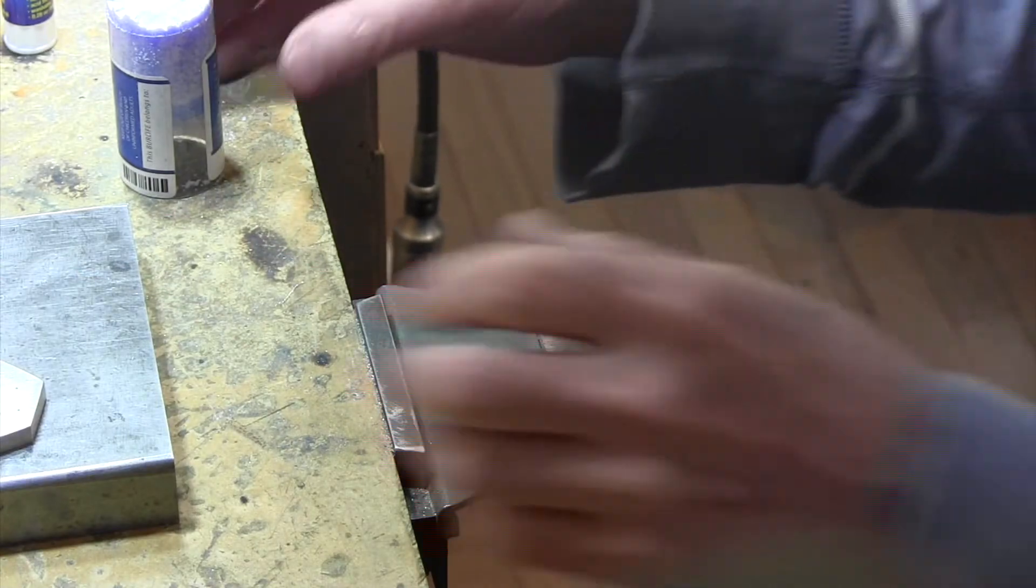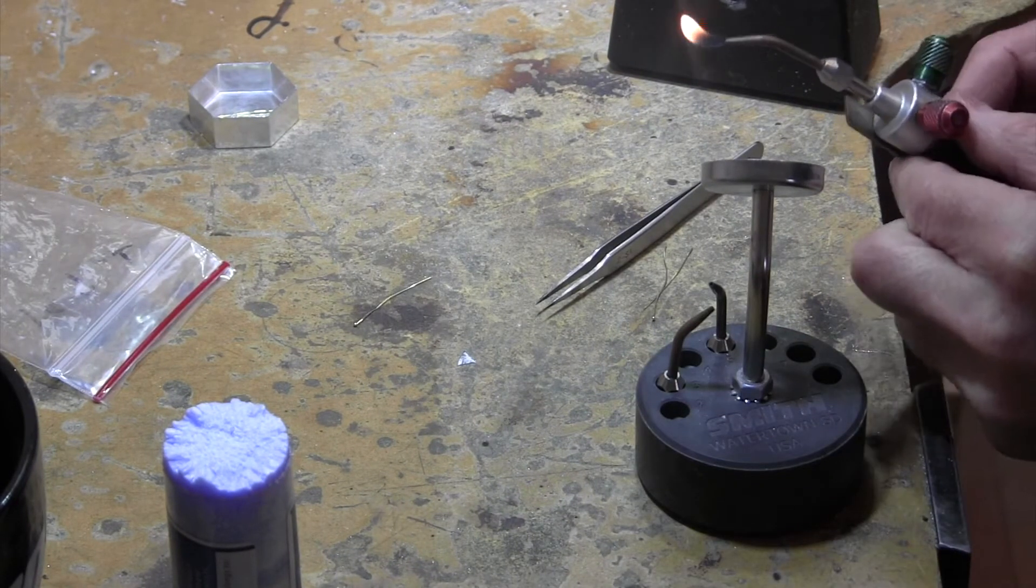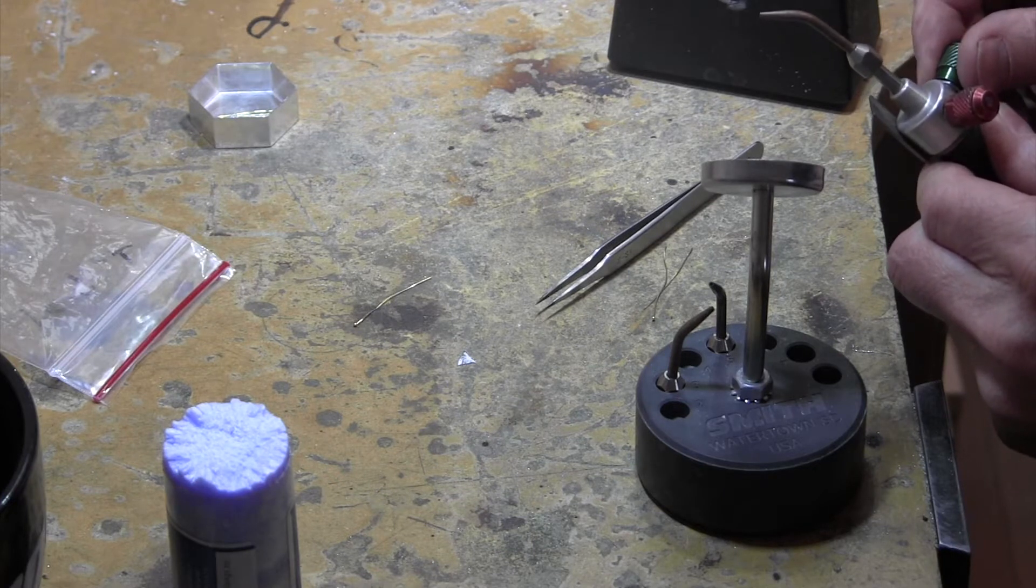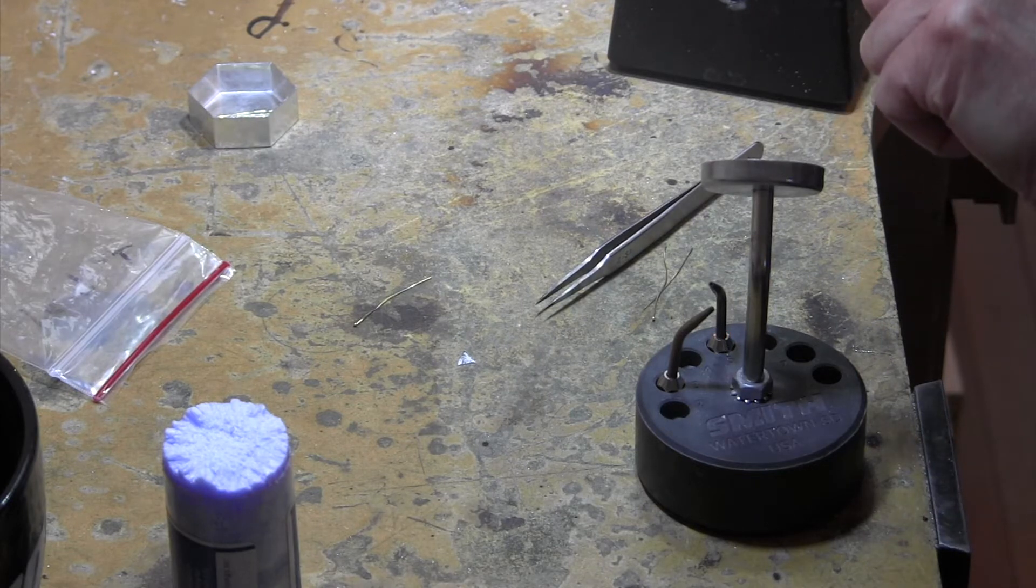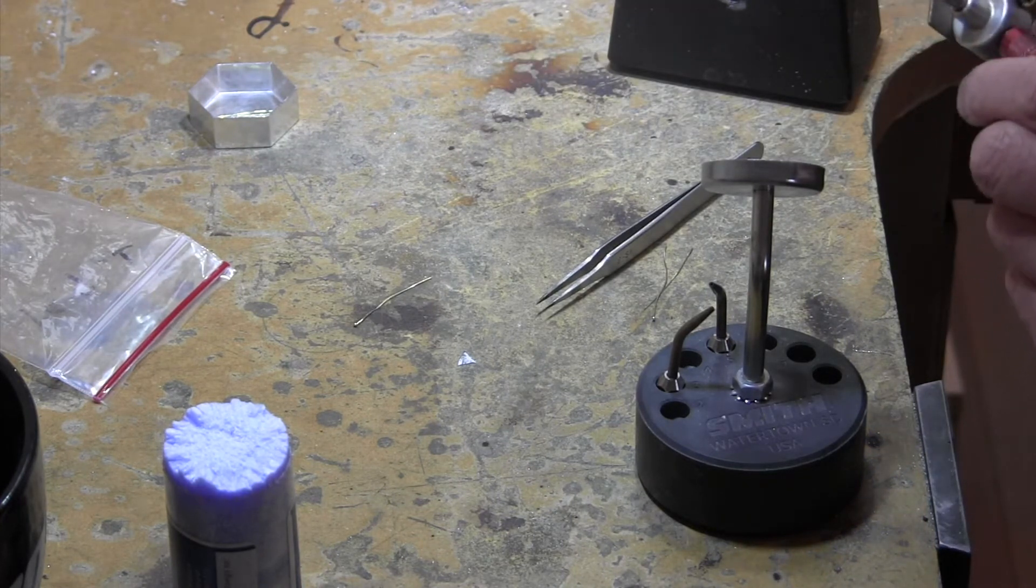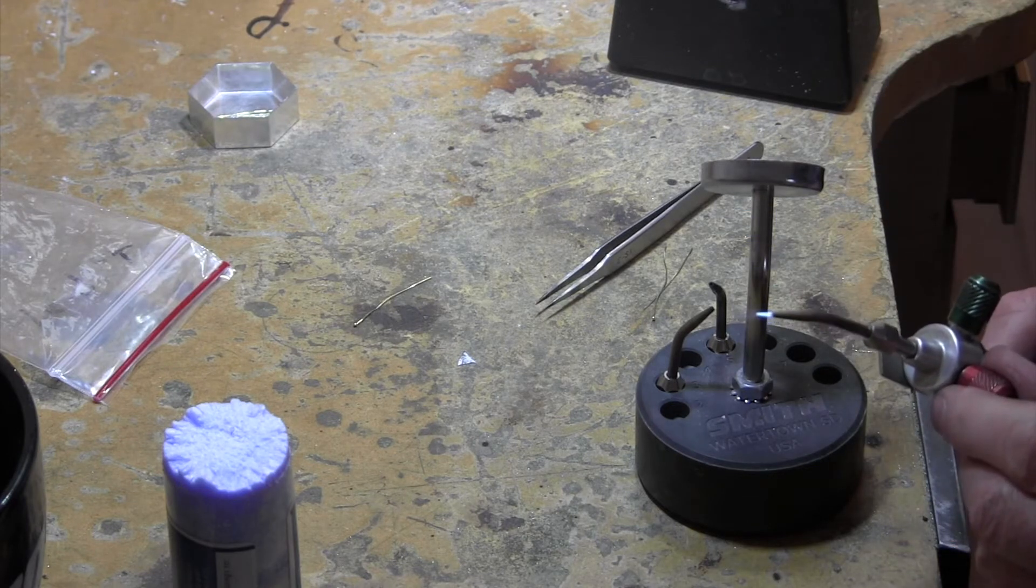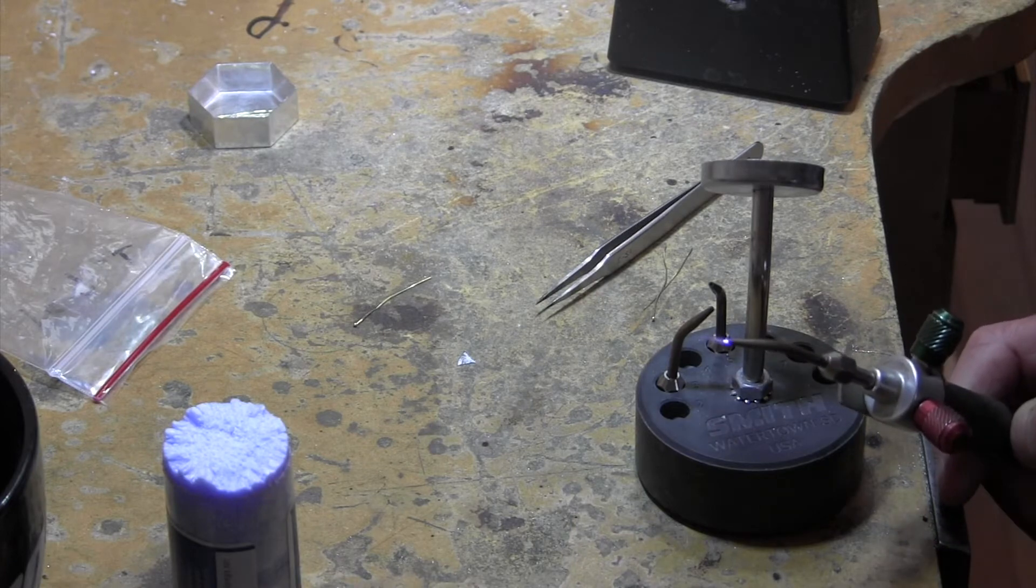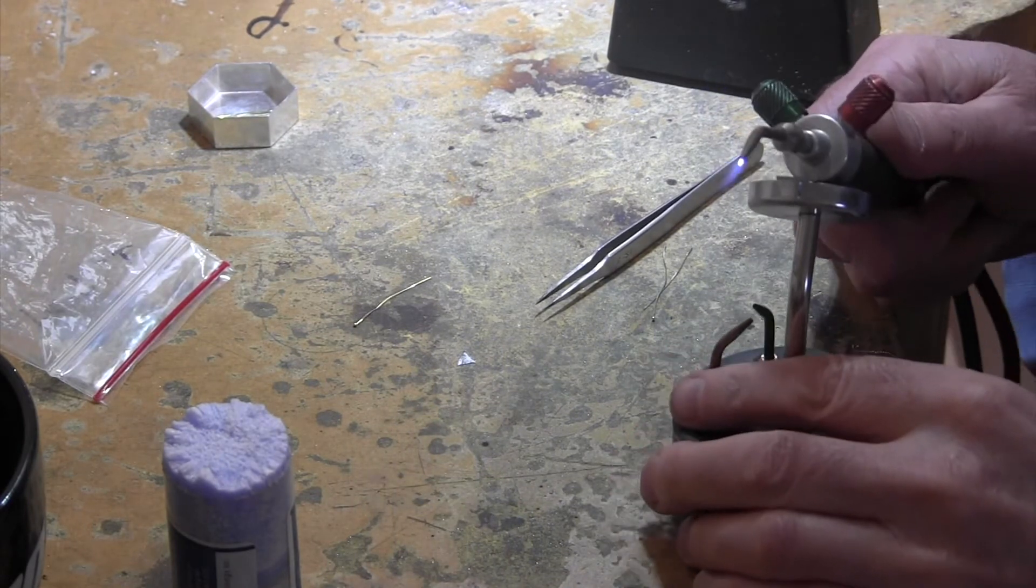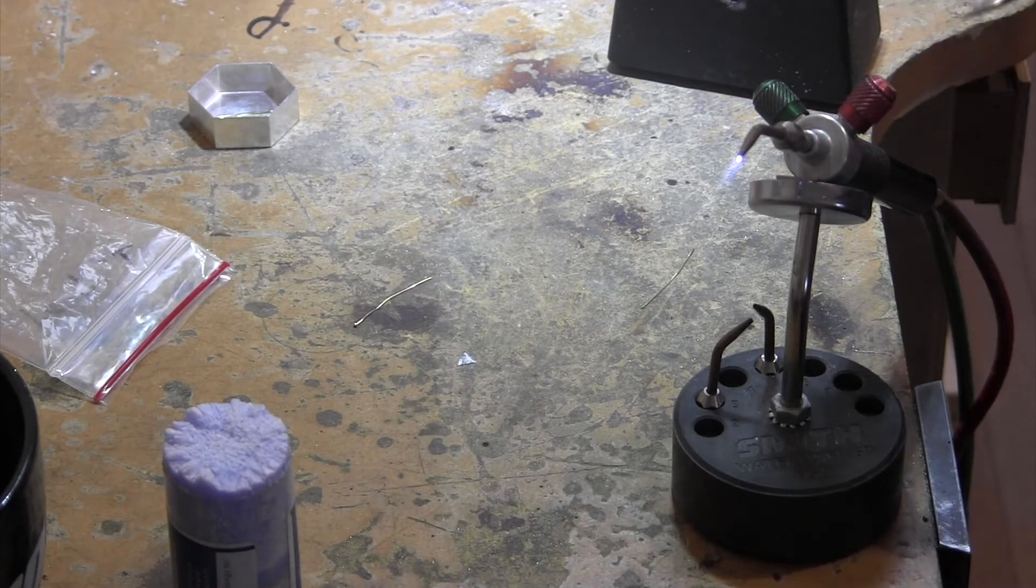Okay, so I got it set up here. I just lit my torch, and you want a real fine...I'm using a 4 torch head. We want a really, really, really fine flame, just about like that. I don't know, maybe if I turn off the light you'll see it. It's just really, really small.